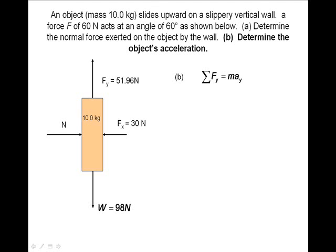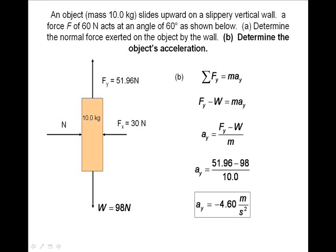We want to find the net acceleration of the object that is being acted upon by both gravity and the retarding force. Fy is upward and the weight is downward, so we write the sum of the forces as Fy minus W. We rearrange the formula to isolate the acceleration. We substitute in our values and find the acceleration to be negative 4.60 meters per second squared. This is about half the acceleration due to gravity.